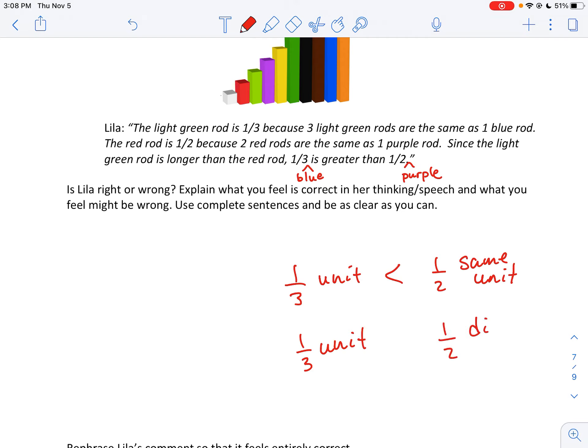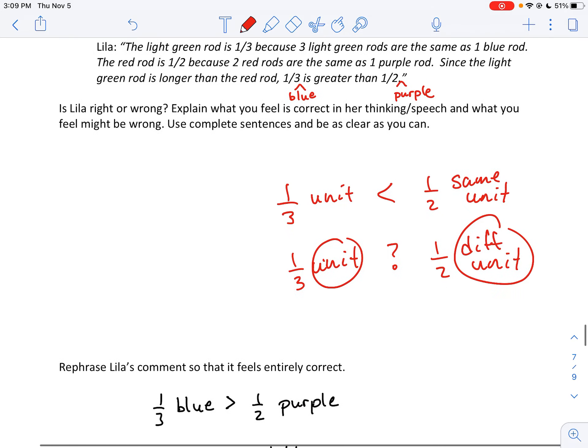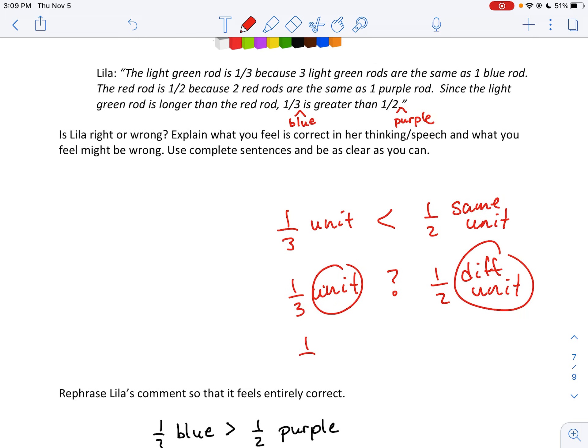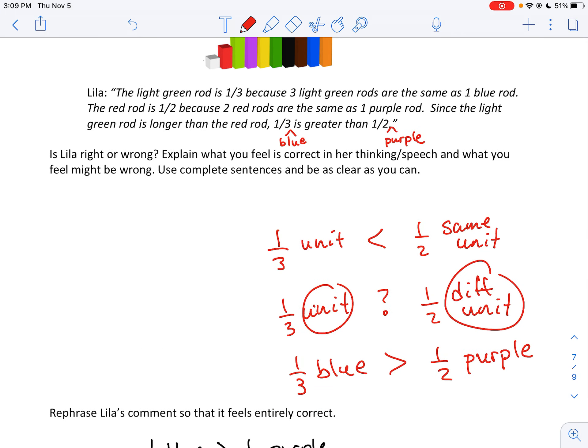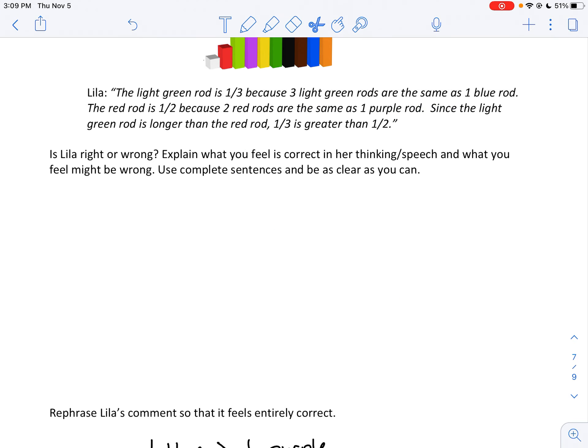But if I say here's a third of a unit, and here's a half of a different unit, and I say which one's more, we have no way to determine this unless you can know how these units compare to each other. Because in Lilla's work, if she had said one-third of the blue, and one half of the purple, and she's thinking about length, which one's longer? Yes, the one-third of the blue is more than one half of the purple. So when you put different units on there, your inequalities might go the other direction.